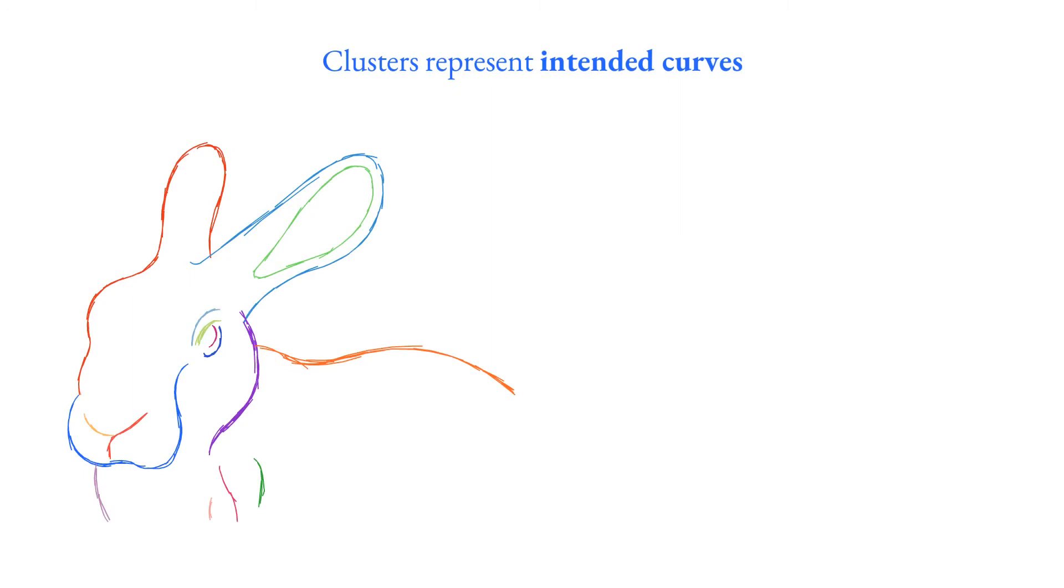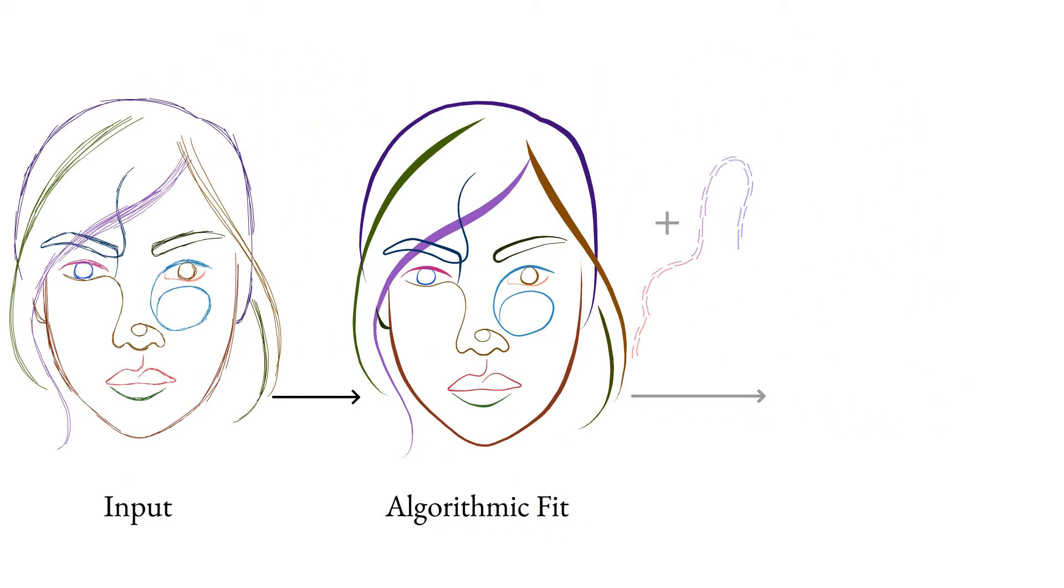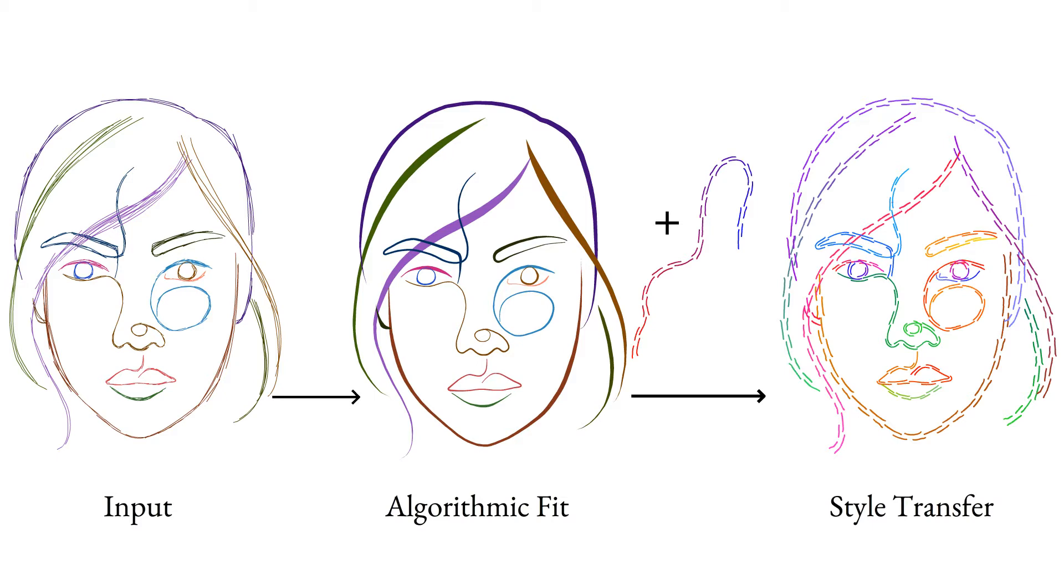When presented with overdrawn vector stroke clusters, human observers effortlessly imagine the intended curves that they depict. Algorithmically fitting such intended curves to their corresponding clusters can benefit many applications that use artists' drawings as inputs.